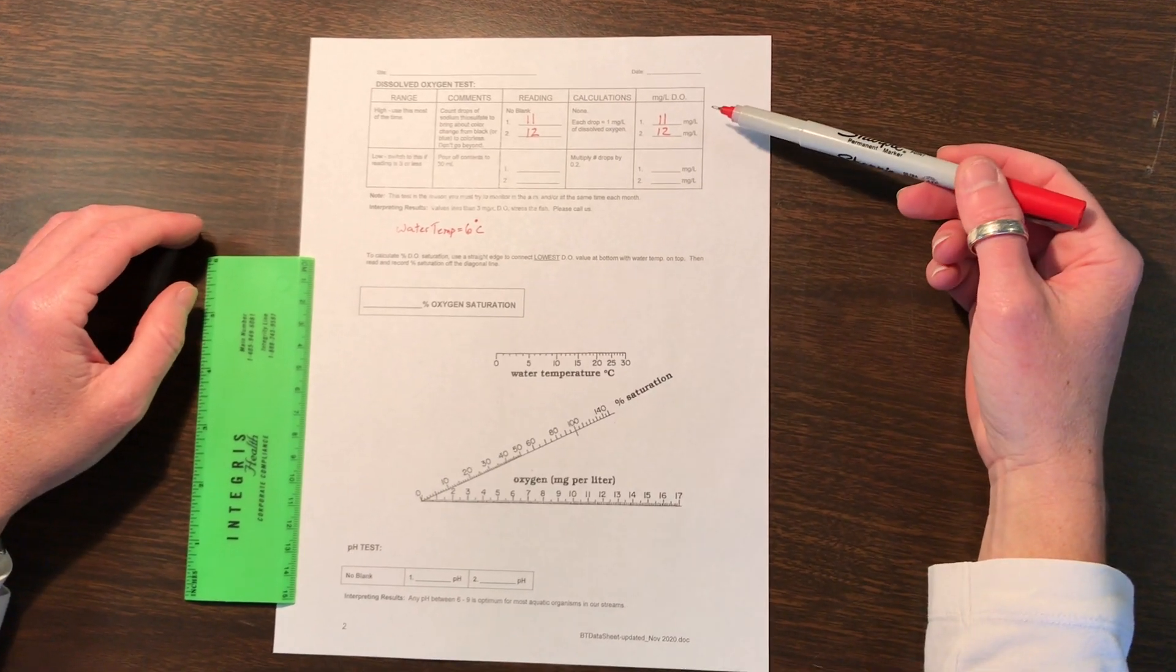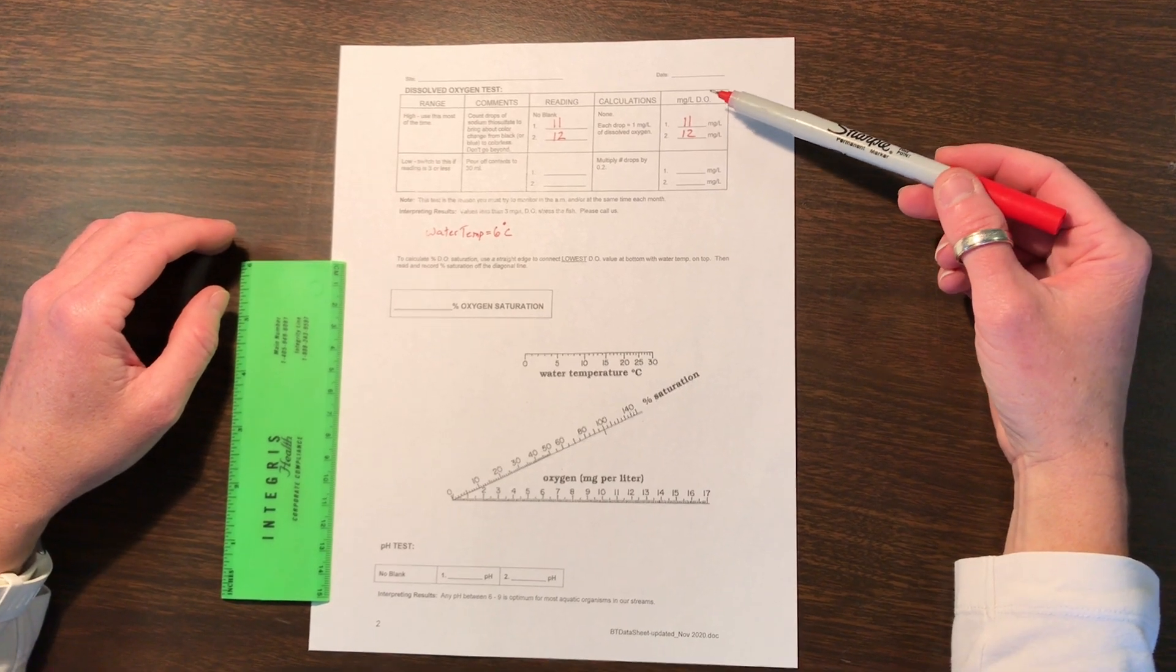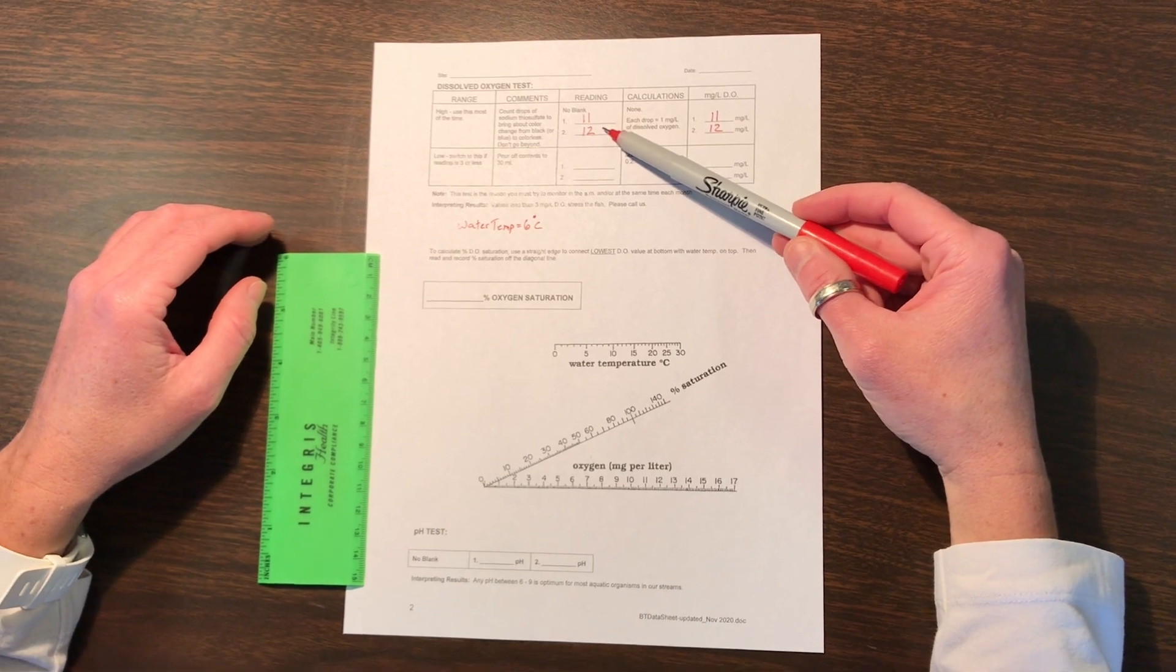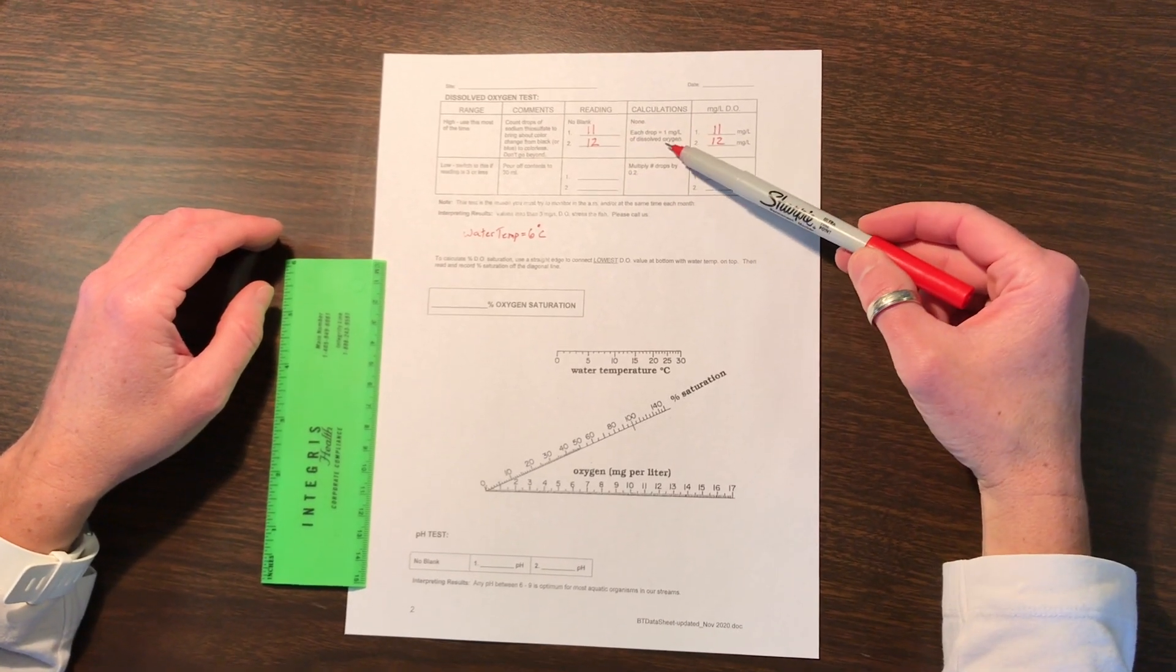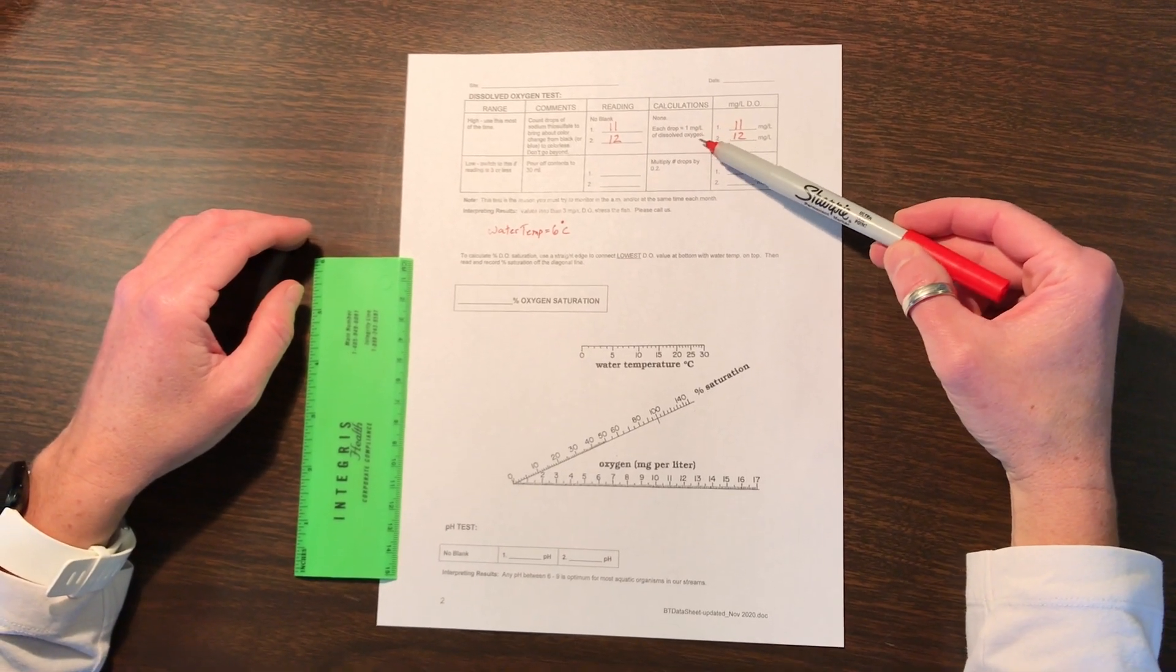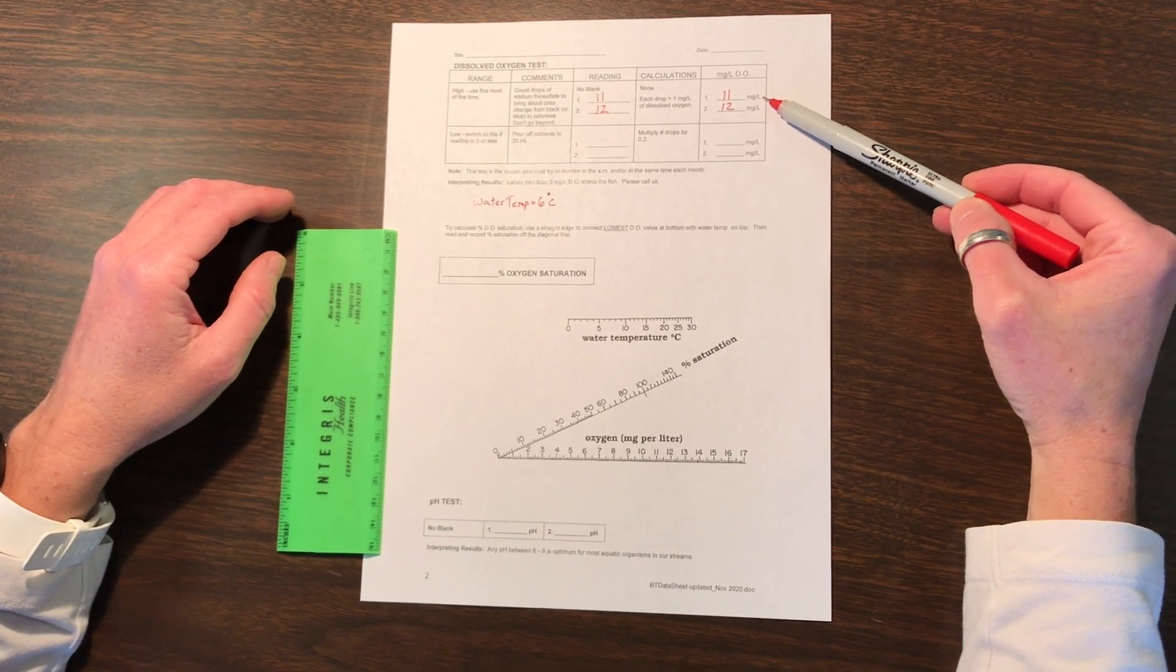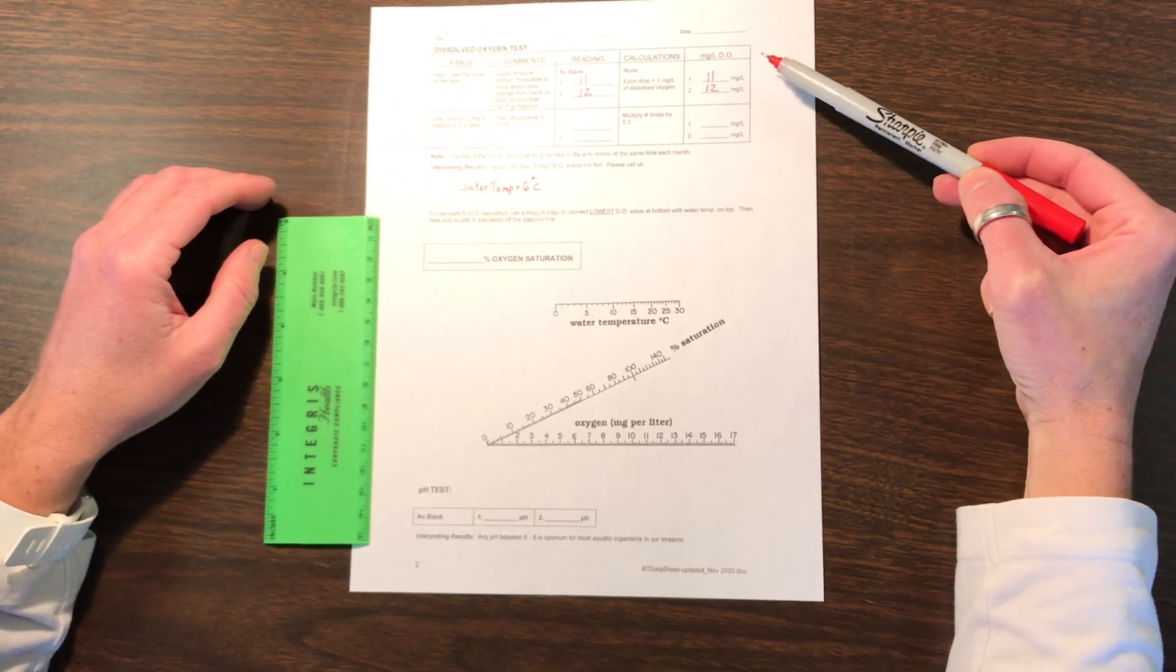Here is a scenario where we have completed our dissolved oxygen test and got results of 11 drops for the first bottle and 12 drops for the second bottle. We are doing the high range test, so each drop equals 1 mg per liter of oxygen. Hence, 11 mg per liter for the first bottle, 12 mg per liter for the second bottle.